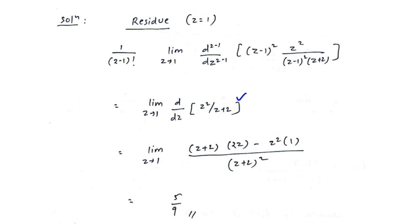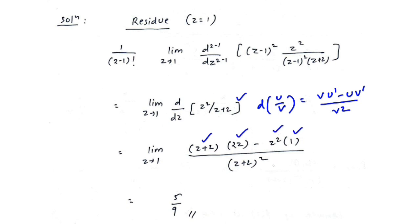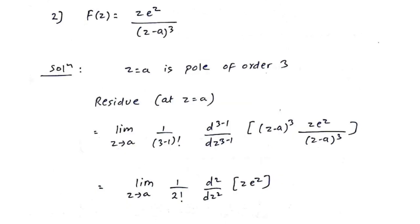Since the function is u over v, use the quotient rule: (v times derivative of u minus u times derivative of v) over v-squared. This gives (z plus 2) times 2z minus z-squared times 1, all over (z plus 2) squared. Putting z equals 1 gives the final answer of 5 by 9.